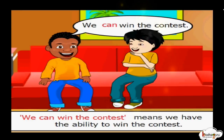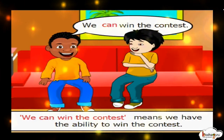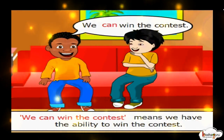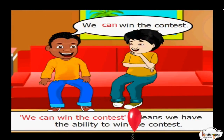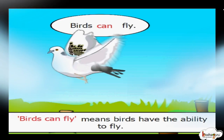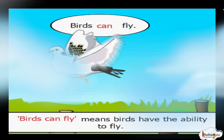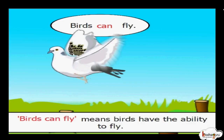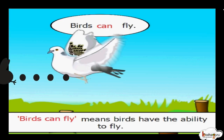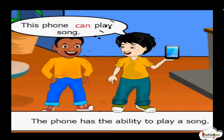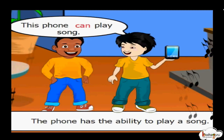We can win the contest — it means we have the ability to win the contest. 'Can' is used here to express the ability to win. Birds can fly — 'can' is used to express the ability of a bird. Birds can fly means birds are able to fly. This phone can play a song — 'can' is used to express the ability of an object; the phone has the ability to play a song.